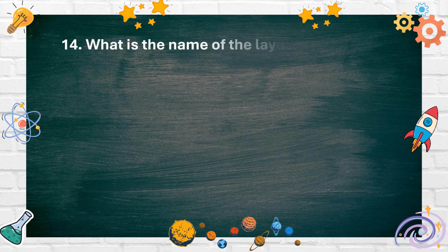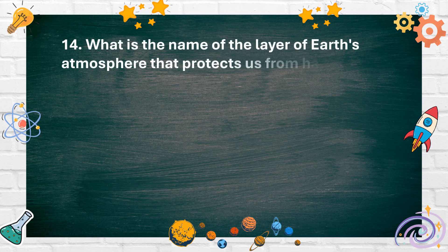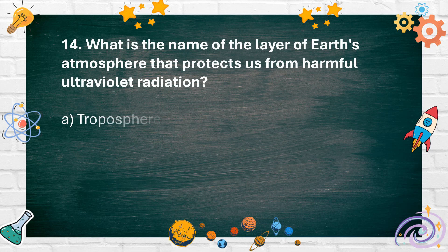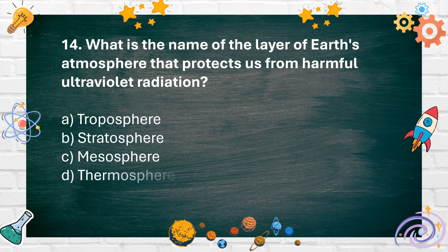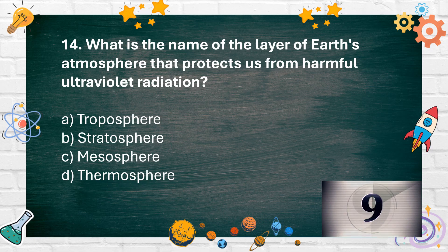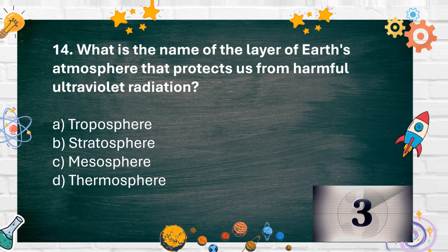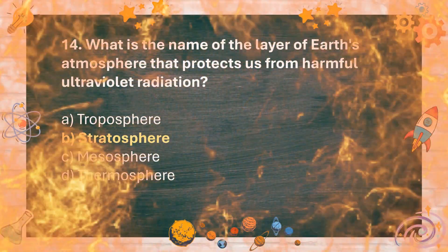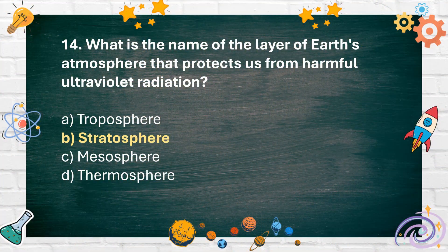Number 14. What is the name of the layer of Earth's atmosphere that protects us from harmful ultraviolet radiation? A. Troposphere, B. Stratosphere, C. Mesosphere, D. Thermosphere. The answer is B. Stratosphere.